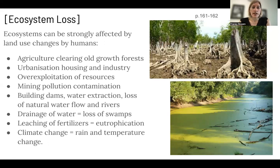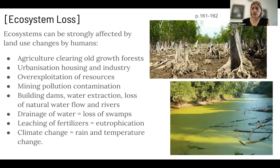Mining pollution and contamination can affect a wide range of water sources. Building dams and water extraction — loss of natural water flows in rivers — can affect how much water access there is for different organisms. Drainage of water, like clearing swampland, removes important water filtration. Swamps are really good for filtering water, and organisms like beavers can't live in an open lake. Fertilizers from agriculture can go into water and cause eutrophication. And climate change is obviously affecting rainfall and temperatures, making it hard to grow crops when seasonal patterns are unpredictable.